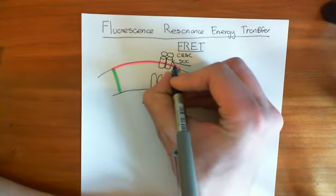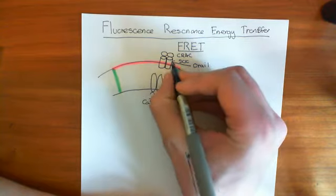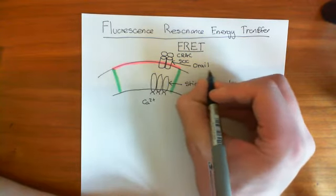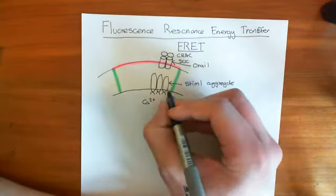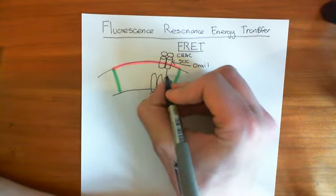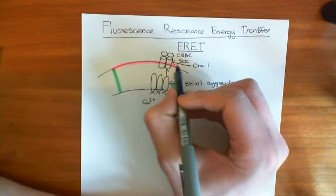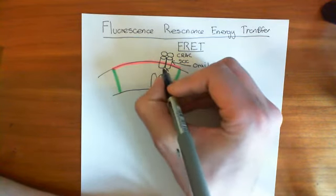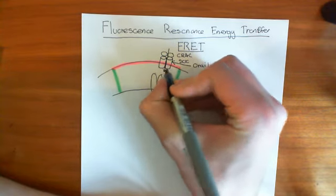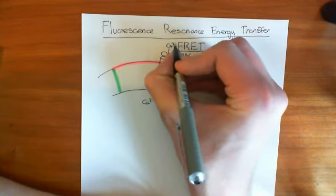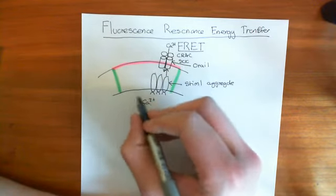This store-operated calcium channel is made up of four subunits, and each one of these subunits is encoded for by a protein known as ORAI1. STIM1 aggregates interact with the ORAI1 subunits of this CRAC channel and basically cause it to open — adopting an open conformation and allowing calcium to come in from outside the cell into the cytoplasm of this microdomain.